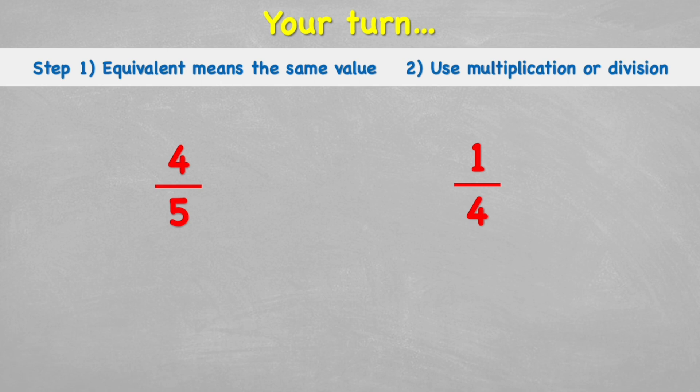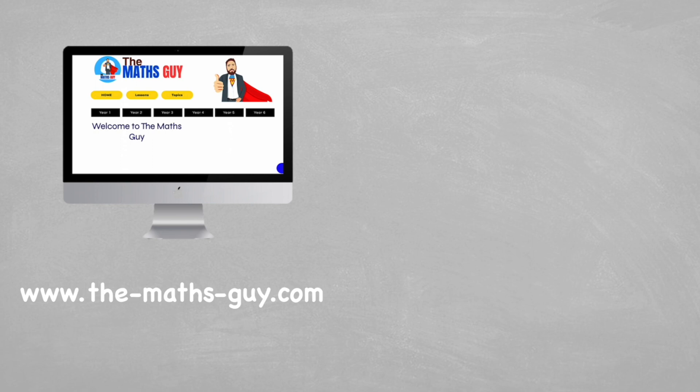Your turn — have a go at finding one or two equivalent fractions for four fifths and for one quarter. You can draw chocolate bar models or just use multiplication and division facts. Put your answers in the comment section and I'll try to mark them all. That's how to find equivalent fractions using bar models and multiplication and division. Share it with a friend who'd benefit, and I'll see you in another video!